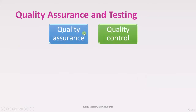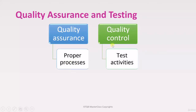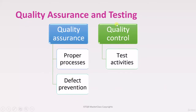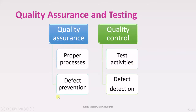Quality Assurance is process-oriented, whereas Quality Control contains activities — QA is theoretical and QC is practical. The second key point is that Quality Assurance is a defect prevention mechanism, meaning that by providing documentation we try to prevent defects. Quality Control, on the other hand, is a defect detection mechanism — we try to find the defect.